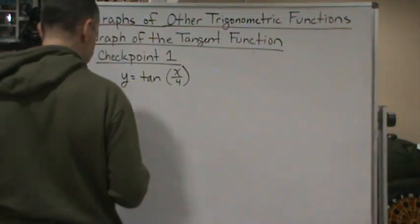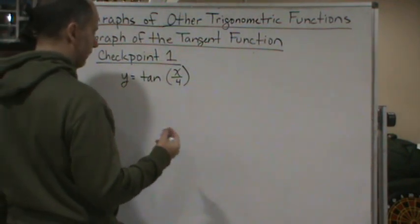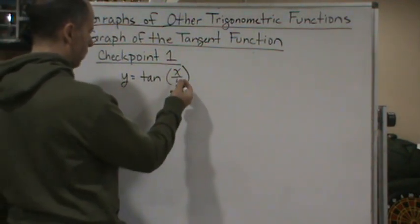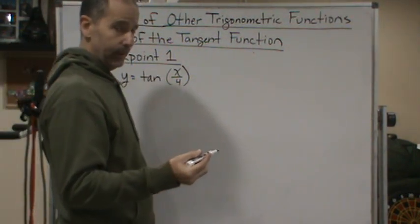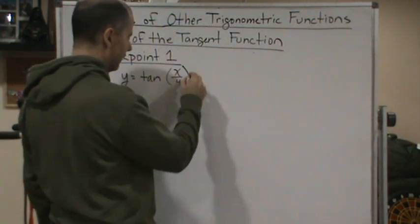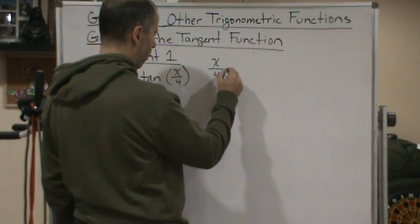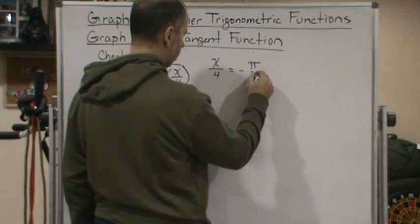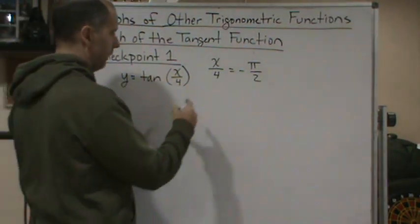All right, so here we go. Again, what we're going to do is we need to find the asymptotes. So we're going to take the argument and make them equal to π/2 and negative π/2. So again, we're going to get the same sort of relationship here. So we've got x/4 is equal to negative π/2.